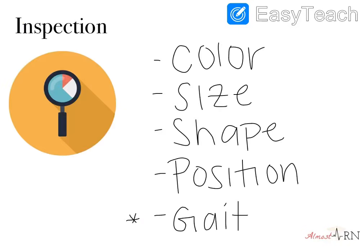So inspection — we're going to start out with that. Usually inspection is generally the first thing that you do across the board. You kind of want to see what's going on before you get hands-on. For inspection, we're going to look at the color, the skin color. If you're doing a skin assessment, look at the color of the moles. Overall, you're going to look at the color, the size, the shape, and the positioning.